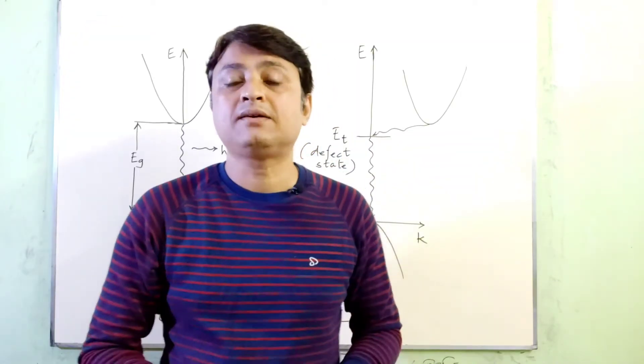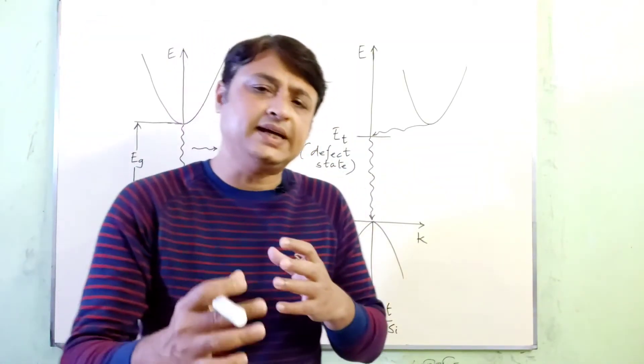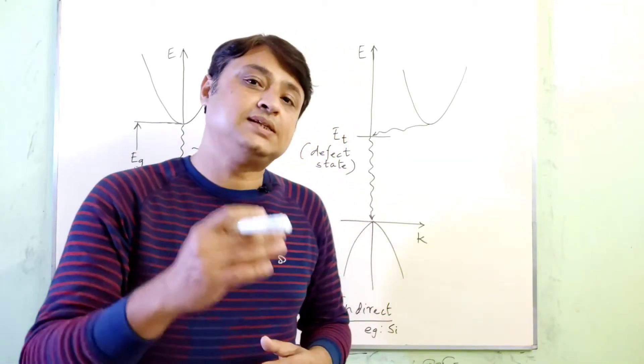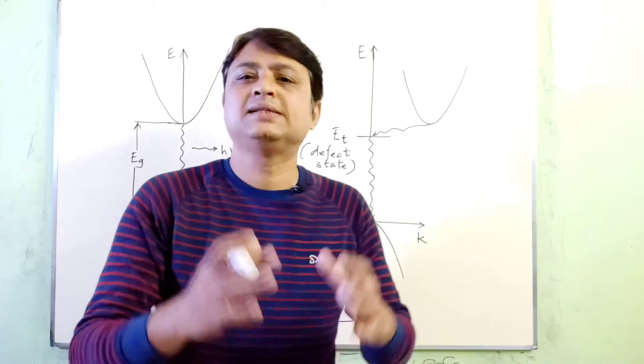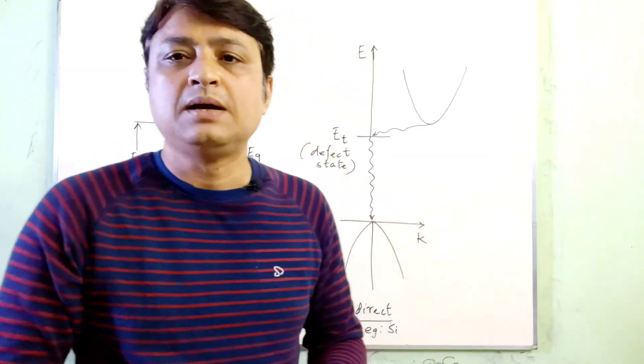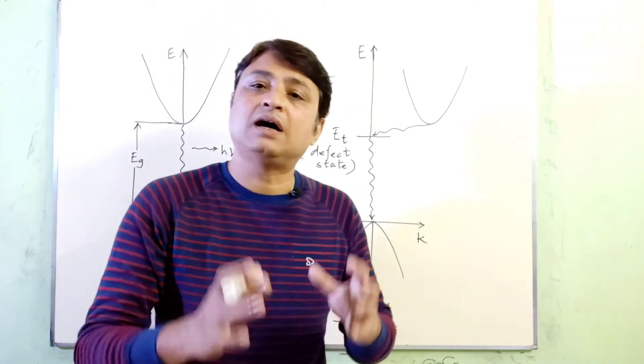So in indirect transitions, which require a change in the value of K, the energy is given up as heat in the lattice structure rather than as a photon.